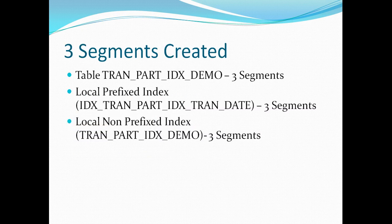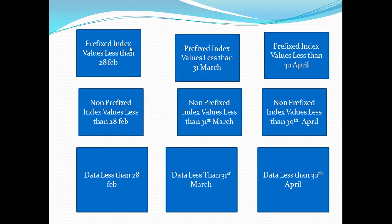After execution, three segments have been created for my table and the same segments have been replicated for my prefix index and non-prefix index. Earlier I mentioned that local indexes share the same boundary — let's see what that means. When I inserted the data, three partitions were created: the first where data was less than 28 Feb, the second less than 31st March, and the third less than 30th April. Oracle also created three partitions each for the local prefix index and non-prefixed index with the same boundaries.